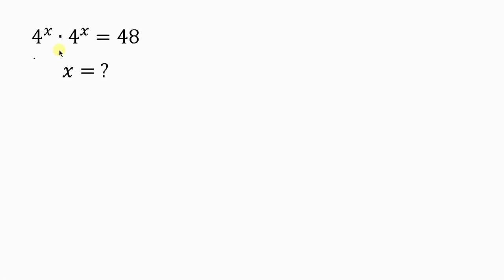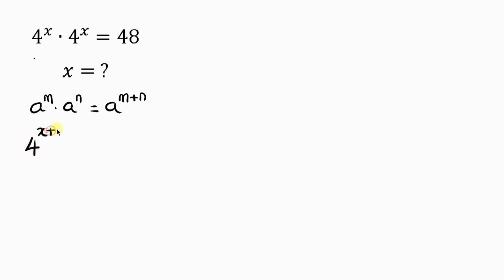Our first step will be to apply the law of indices, which says when I have a to the m times a to the n, this is equal to a to the m plus n. So we're going to apply this law here, making this expression 4 to the x plus x, equal to 48. Now this becomes 4 to the 2x equal to 48.